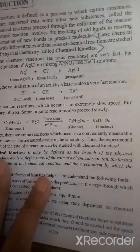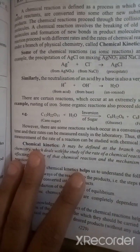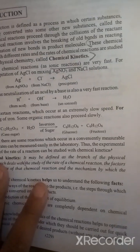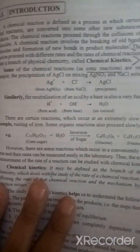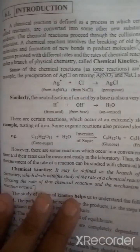However, there are some reactions which occur in conventionally measurable time and their rates can be measured easily in the laboratory. You can know very easily by experiment. The experimental measurement of the rate of reaction can be studied with chemical kinetics.